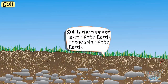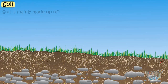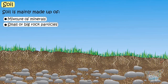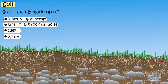Soil is the topmost layer of earth, or the skin of earth, which is mainly made up of a mixture of minerals, small or big rock particles, clay, water and organic matter.